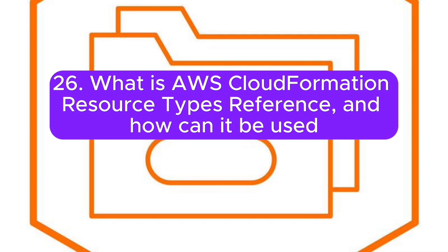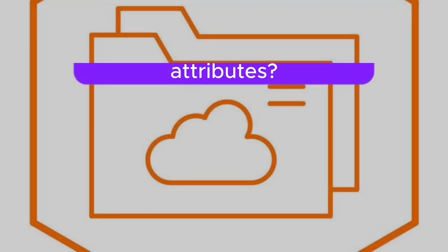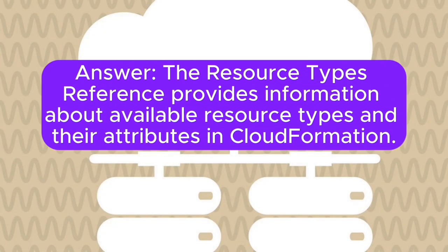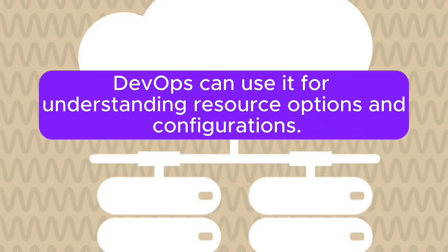Question 26: What is the AWS CloudFormation resource types reference, and how can it be used in DevOps for understanding available resource types and attributes? Answer: The resource types reference provides information about available resource types and their attributes in CloudFormation. DevOps can use it for understanding resource options and configurations.